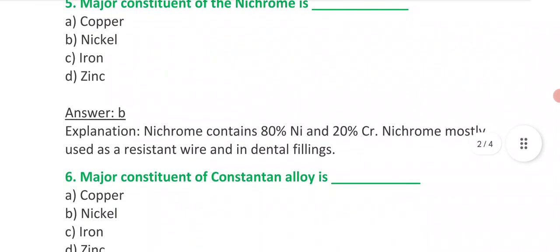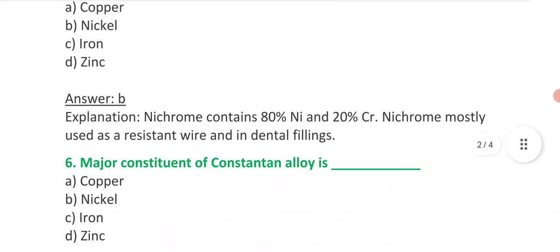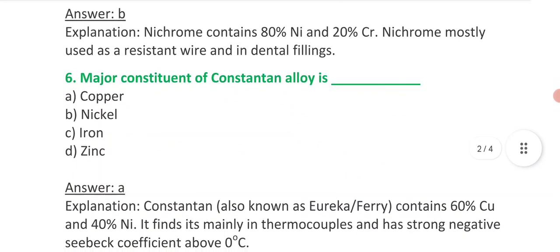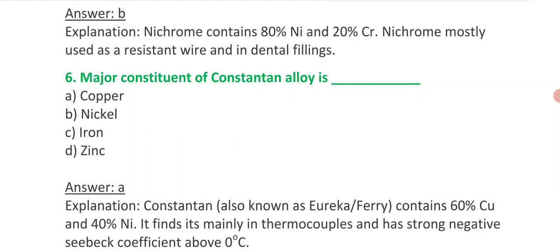Sixth question is: major constituent of Constantan alloy is - option A copper, option B nickel, option C iron, option D zinc. And answer is A.